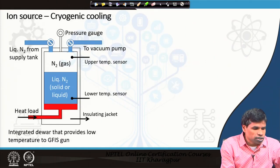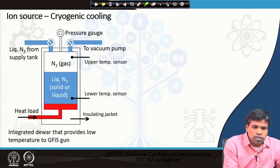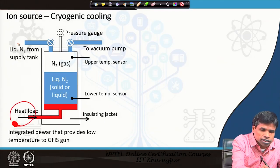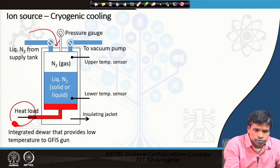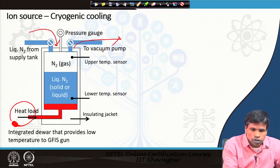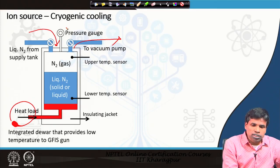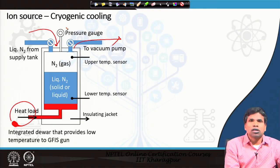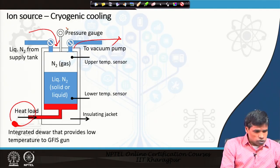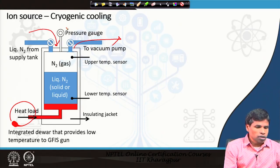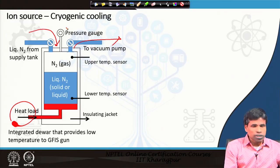The cooling system has a heat load coming in, with liquid nitrogen supplied from a supply tank connected to a pump. We have a pressure gauge inside the cryogenic cooling system. Various cooling methods are available such as Joule-Thomson, Gifford-McMahon, and pulse tube cooling. In early helium ion microscopes, a pulse tube cooler was used, operating in active and quiet modes.